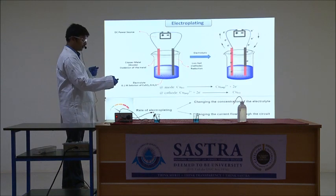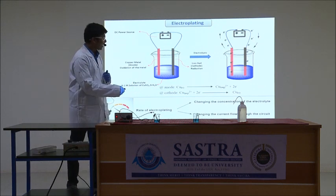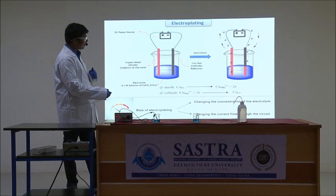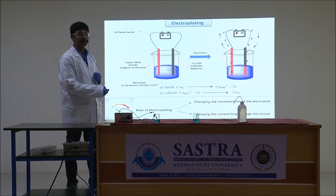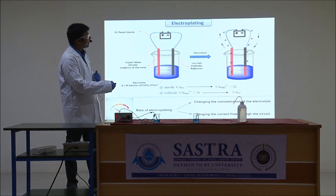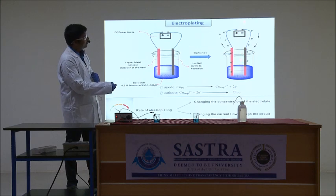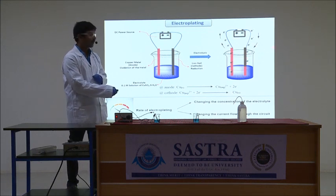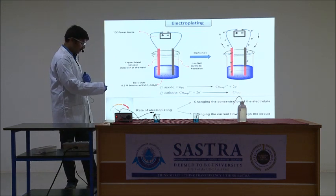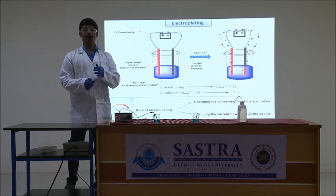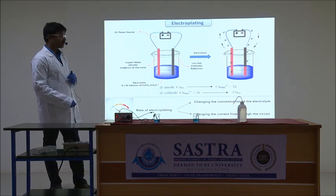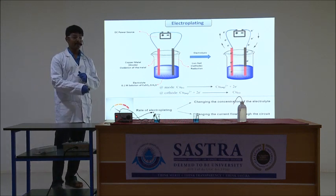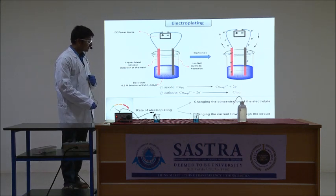In this experiment, copper acts as the anode and the iron nail acts as the cathode. At the anode, copper gets oxidized and releases two electrons, which is why it should be connected to the positive terminal of the battery. These electrons are pushed towards the cathode by the negative terminal. At the surface of the cathode, the electrons attract copper²⁺ ions from the solution; copper²⁺ is reduced by two electrons to give copper⁰, which is insoluble and deposits on the surface of the iron nail. The rate of deposition can be varied by changing the concentration of the electrolyte — the copper sulfate concentration — or by changing the current flow between the electrodes.